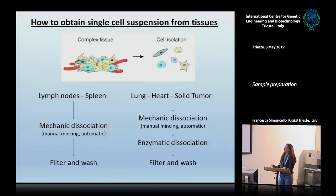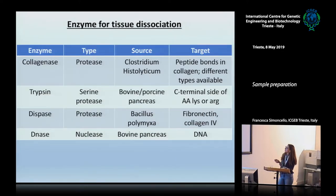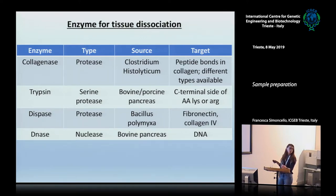Unfortunately, in the majority of cases you have more complex tissue and mechanical dissociation is not enough. In order to obtain a single cell suspension from lung, heart, or solid tumour, you have to perform also an enzymatic dissociation. Different types of enzymes can be used for tissue dissociation. For example, if you want to isolate immune cells from the tissue, you can use collagenase — it is a protease that targets peptide bonds between collagen, and different types are available. Always check that you preserve the expression of your epitope.